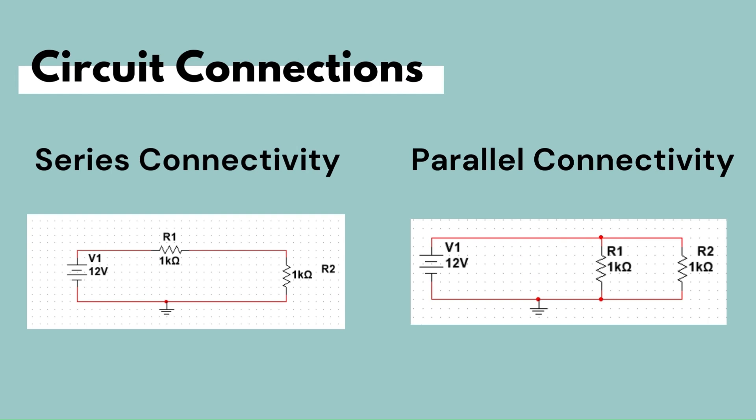Components in a circuit can be connected in many ways. There are two fundamental ways to connect more than two circuit components: series and parallel. These two basic connection methods can then be combined to create more complex circuits that utilize both series and parallel connections.